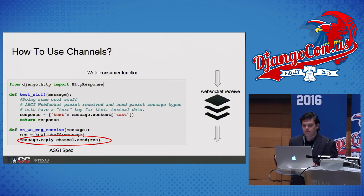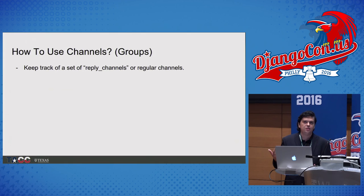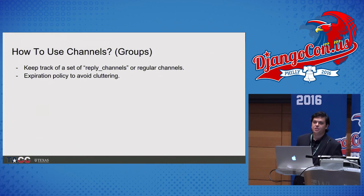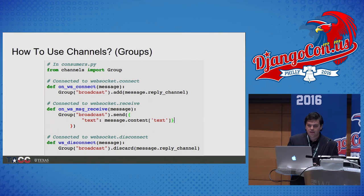If we want to implement something like a broadcast application or a chat, we need to send the same message to different reply channels. Luckily, Django Channels already comes with something called groups. Groups keep track of a set of reply channels or regular channels — not only for reply channels, but also for clusters of servers we want to send information to. They have an expiration policy, because we need to keep track of when messages expire so we don't keep sending messages to expired connections.